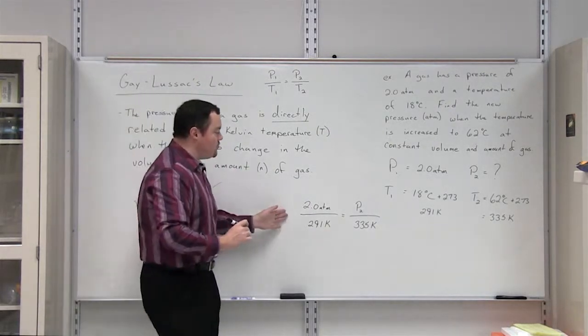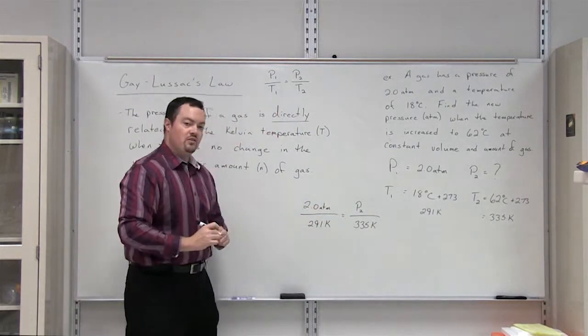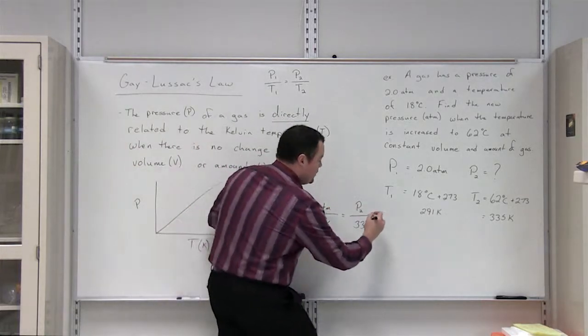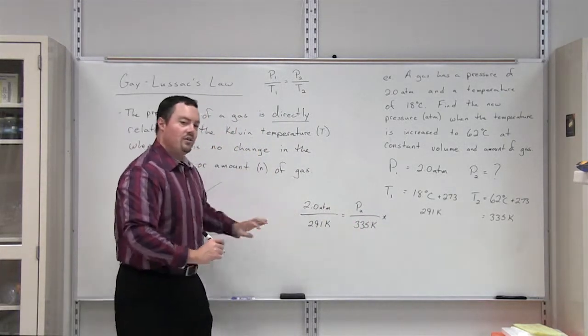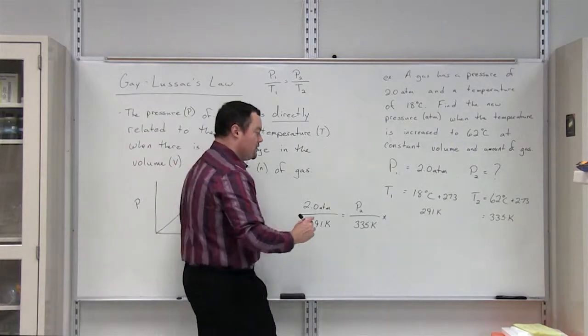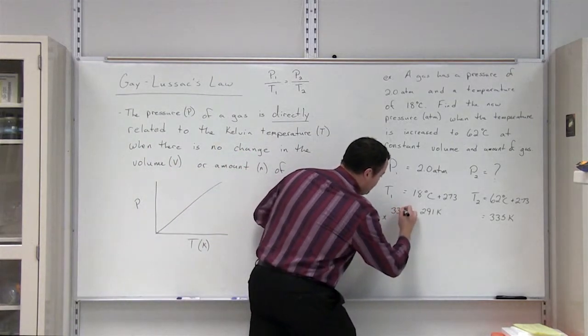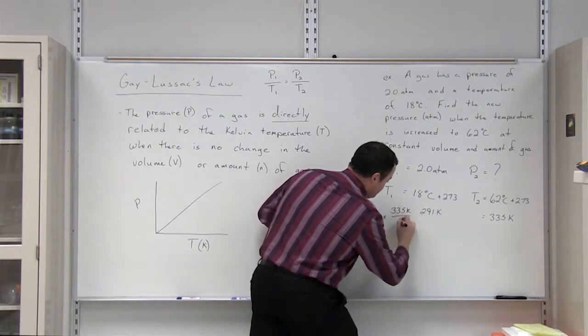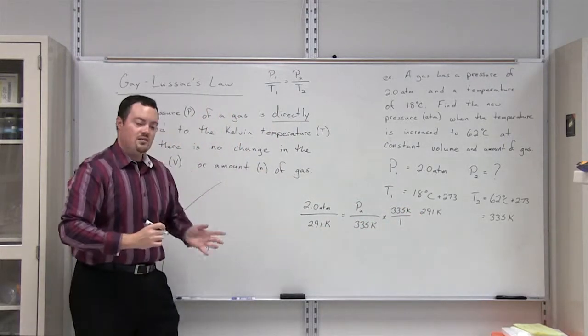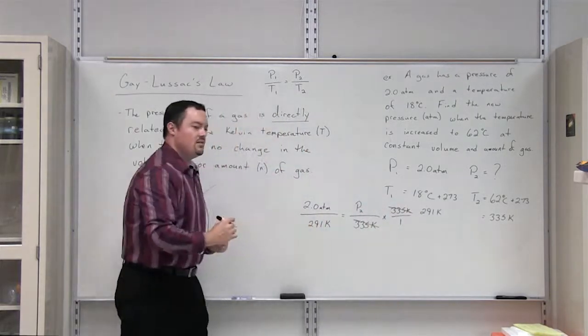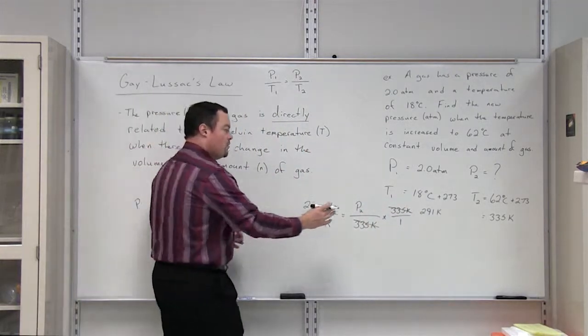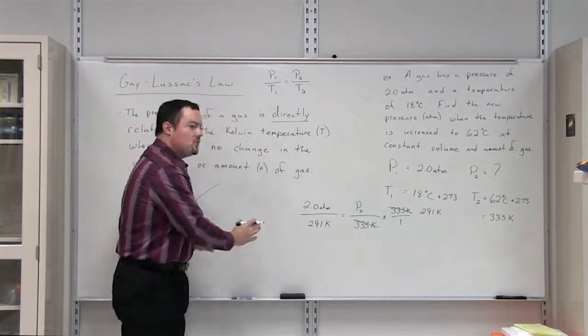Now, by algebraic means, we can solve for P2. The first step is to move our 335 Kelvin over to the left side of the equal sign. In order to do that, we multiply by the inverse. By doing this on the right side of the equal sign, we can now cancel out these temperature variables. But what we do to one side of the equal sign, we have to do to the other side.